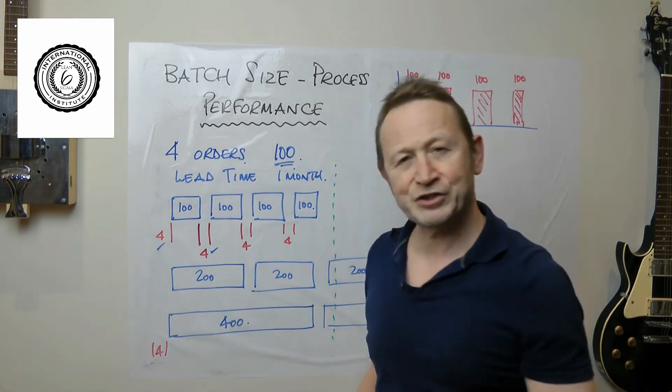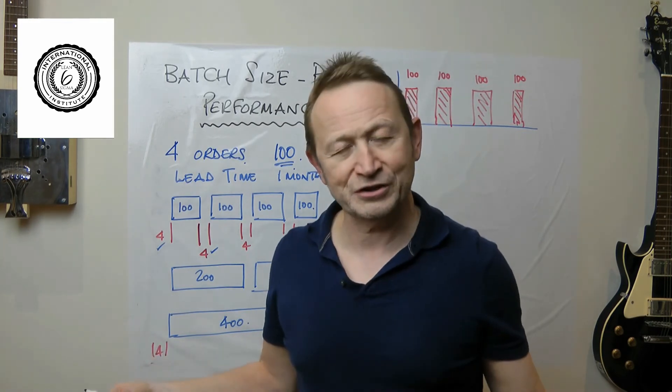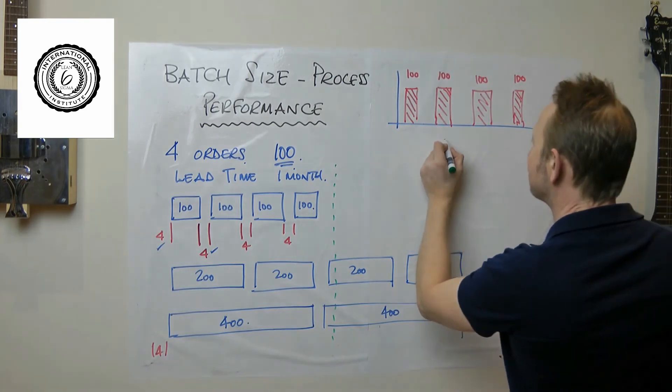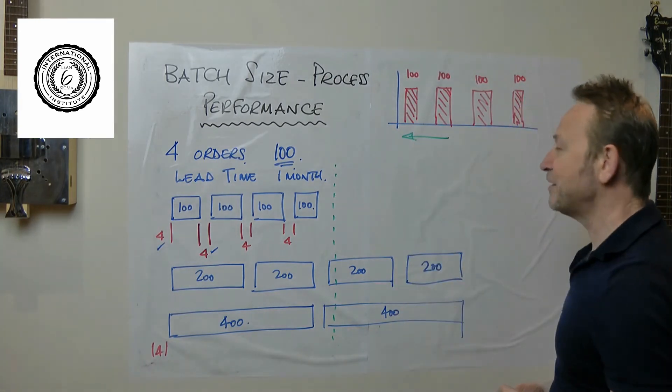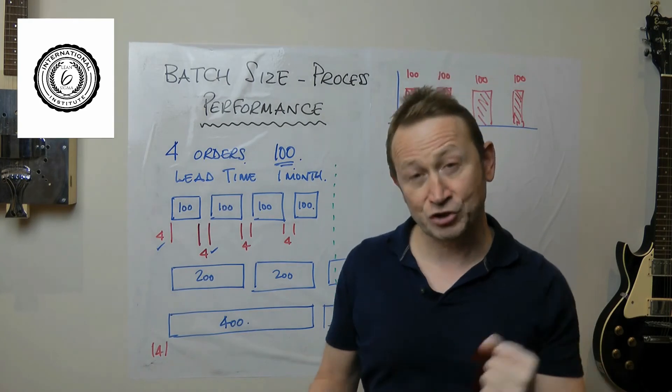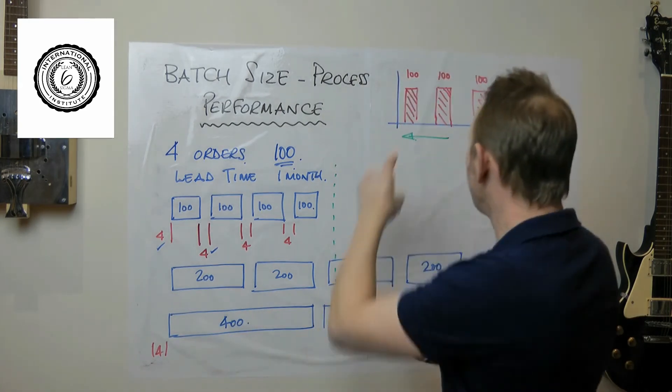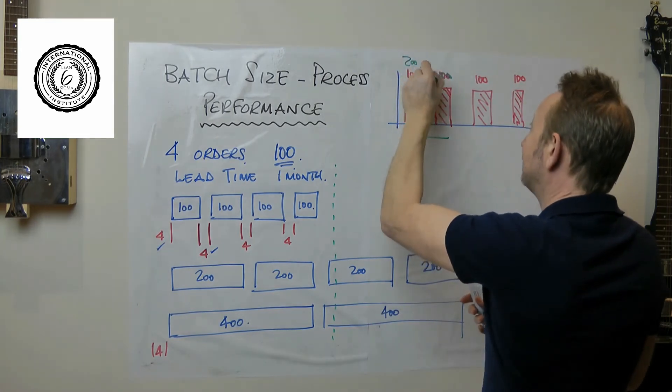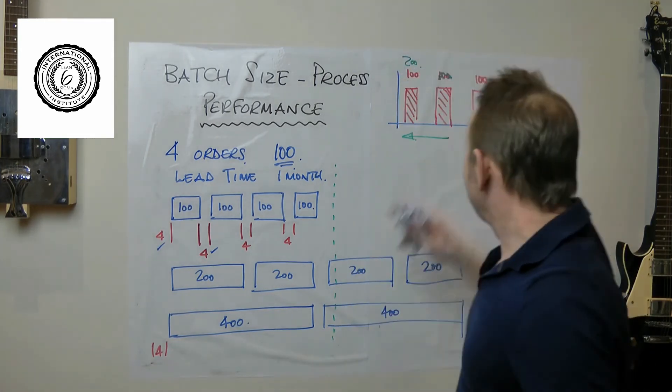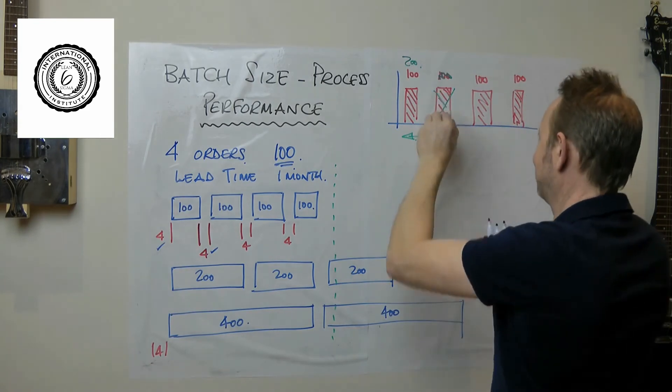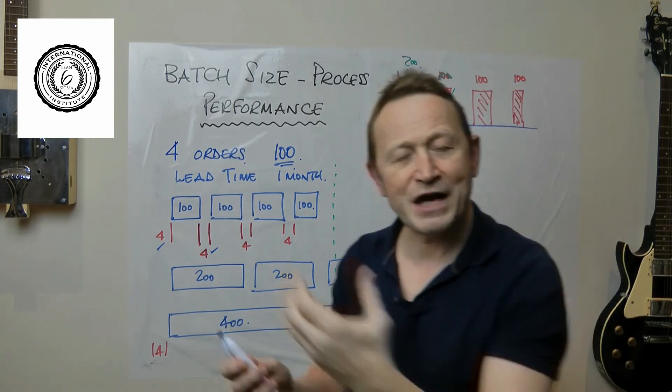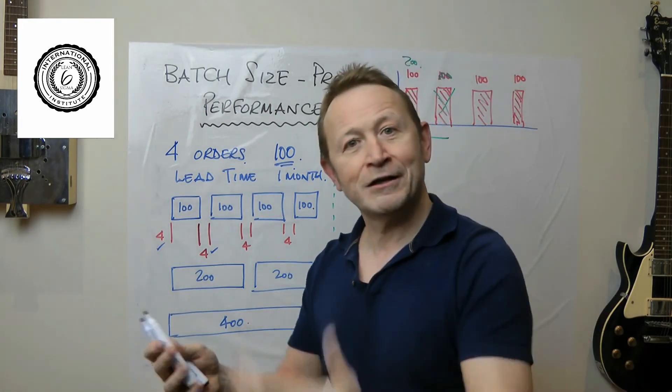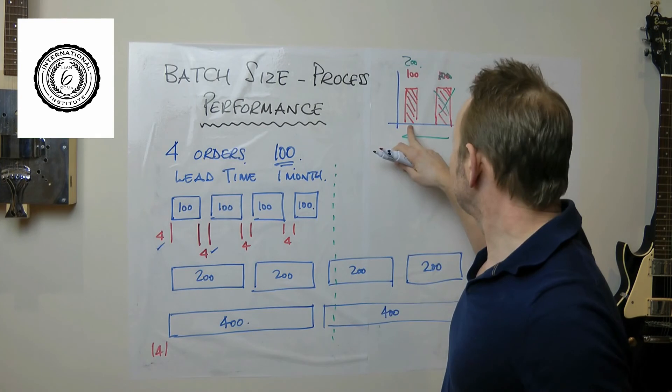So you do a very simple thing and you double the batch size. What does that immediately do? It immediately tells the computer that you've got to bring that order forward. Suddenly you're telling your suppliers, oh I'm awful sorry, we don't want 100 there, what we now want is 200 there. They've suddenly got to bring all the material forward that they've been planning.